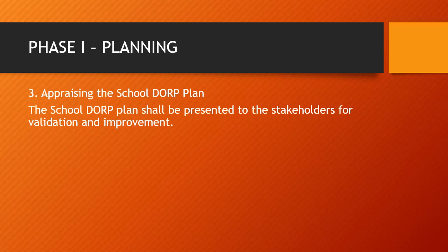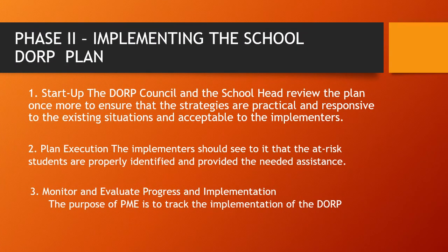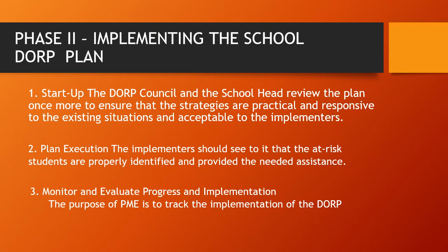Phase one, number three is appraising the school DORP plan. The school DORP plan shall be presented to the stakeholders for validation and improvement. Now let's have phase two of the DORP program, which is implementing the school DORP plan.